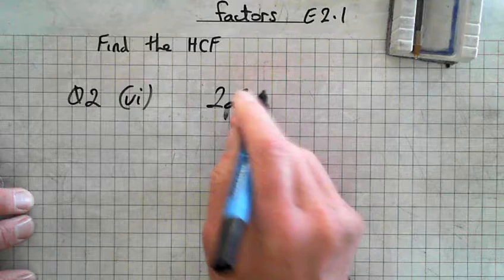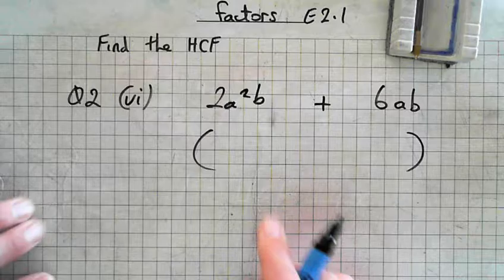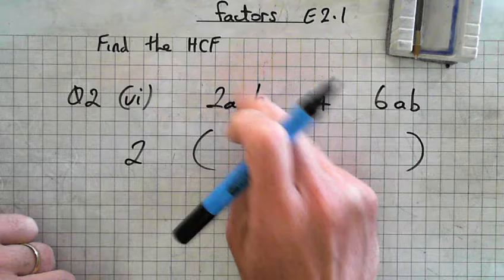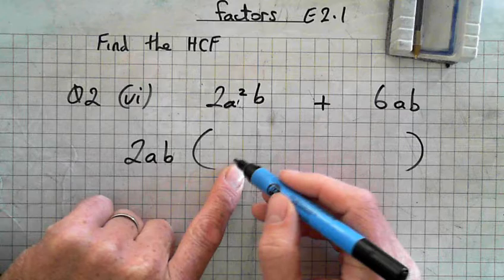Alright, will we do another one for question 2? Question 2 part, let's say, vi. 2a squared b, hold on again, 2a squared b and 6ab. Alright, and is plus, isn't it? Alright, what's the highest number that will divide into 2 and 6? 2.